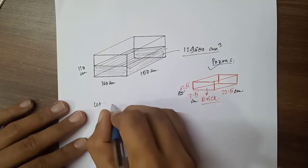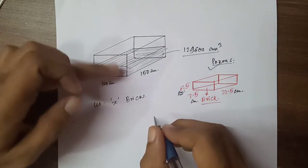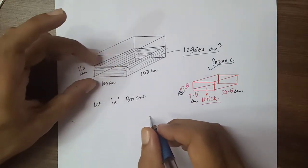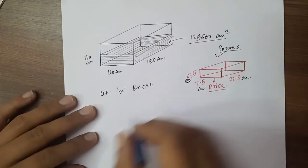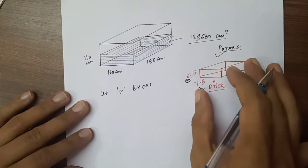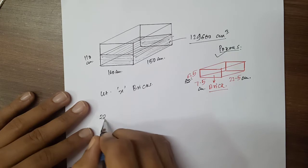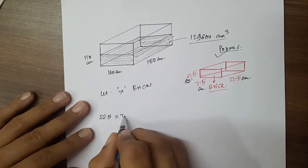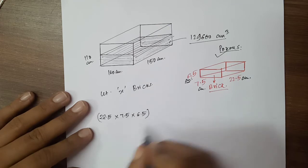Let's start here. Let's say there are x bricks that fill the whole tank. So x bricks we'll see. And one brick is how much? One brick is 22.5, 7.5, 6.5. One brick is how much.